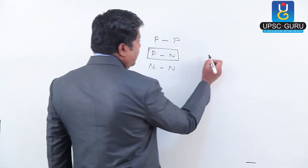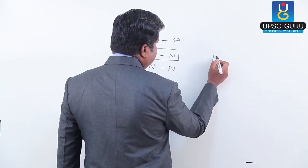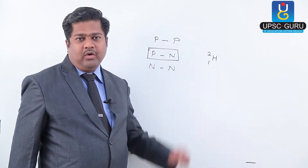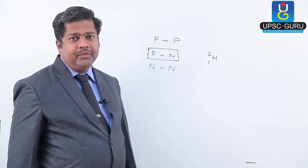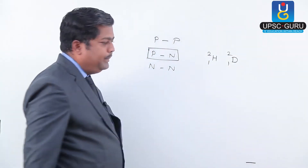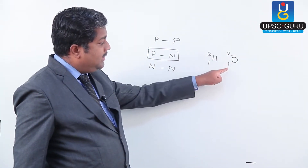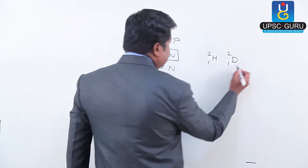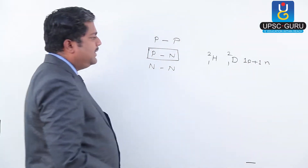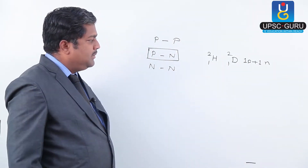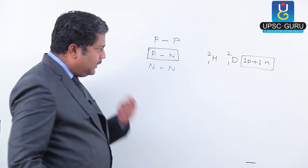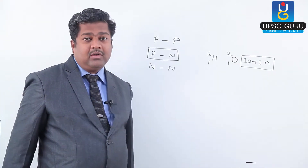We have evidence of this from the atom deuterium, written as H-1,2 — an isotope of hydrogen, also represented as D-1,2. Mass number minus atomic number gives the number of neutrons. So deuterium consists of one proton and one neutron. The existence of deuterium in nature shows that one proton and one neutron can stay together.